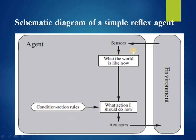The sensors perceive from the environment and give the percept to the agent. According to what the world is like now, the action is generated — what action to take is decided depending upon the condition-action rules, and the action is taken by the actuators and provided to the environment. This is the schematic diagram for a simple reflex agent.